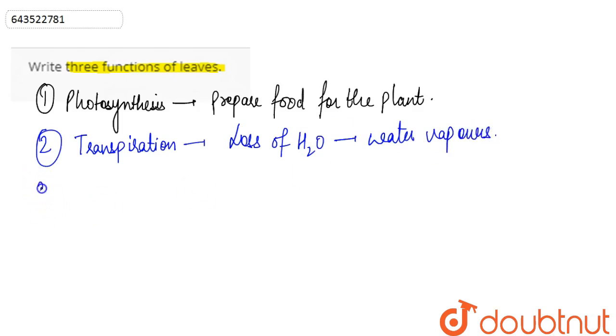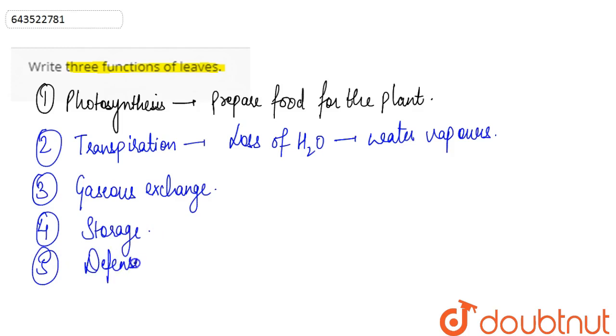Apart from this, the process of gaseous exchange also occurs through the leaves. The leaves also perform the function of storage of food. Apart from this, defense is another function. So there are several other functions like gutation. Basically, these are the important functions.